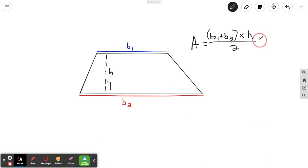This bar here in math, that bar there means divide. So we're doing base one plus base two times the height divided by two.